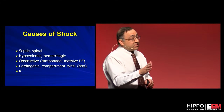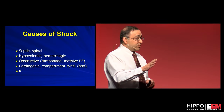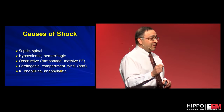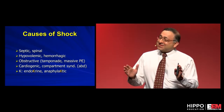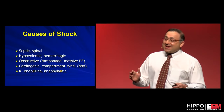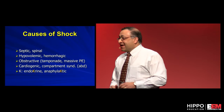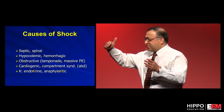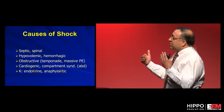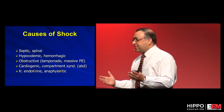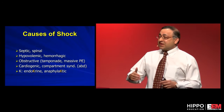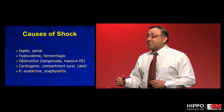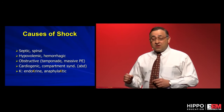K — you'll have to grant me a little license here. The K stands for endocrine and anaphylactic. I don't even know where endocrine fits in the hypovolemic-obstructive-distributive framework, but it's something you've got to think about. And anaphylactic, which is a type of distributive shock, is something everyone invariably forgets about as a possibility.